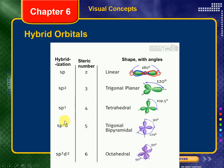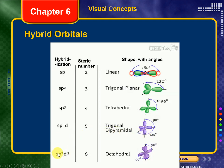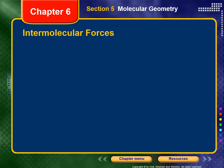Going further: we can dip into the d orbital of the former principal quantum level. Hybridizing one s, three p, and one d orbital gives five hybrid orbitals — sp3d — allowing five electron domains and a shape like trigonal bipyramidal, which is a two-sided pyramid going up and down. We can go even further with sp3d2: six total hybrid orbitals to generate our octahedral shape, the most complex shape we need to identify.